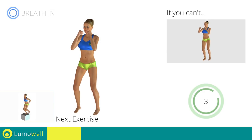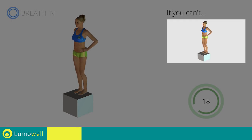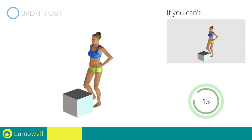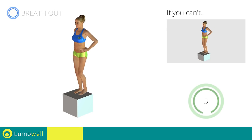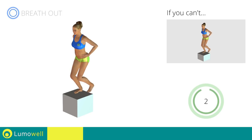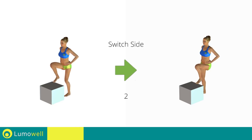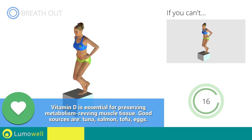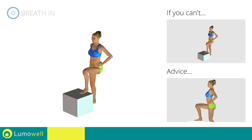Next exercise: step up. Go! If you can't, substitute the chair with an object of a lower height. Switch sides in the shortest time possible. Do not bend or curve your back — to be able to do this, keep your abdominals and glutes well contracted.